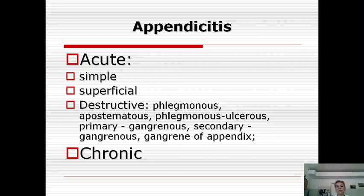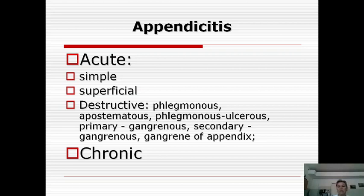The next stage is superficial appendicitis — local leukocyte infiltration throughout the whole appendix. After about one day, we see destructive purulent forms of inflammation: first phlegmonous, then apostematous, then phlegmonous-ulcerative with formation of ulcers. Finally we see necrosis — primary gangrenous, secondary gangrenous, and gangrene of the appendix. There is also a chronic form of appendicitis.